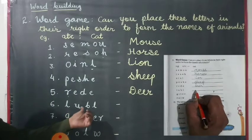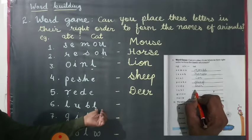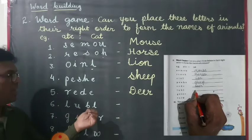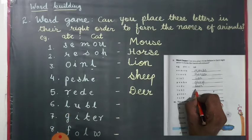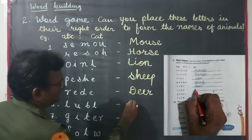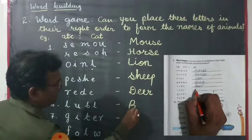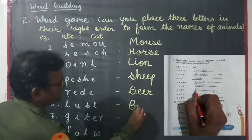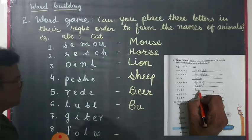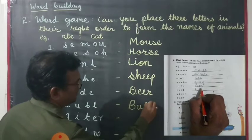Now the letters L, U, B, N — we rearrange them. First we put B, then U, then double-L. The word is bull.